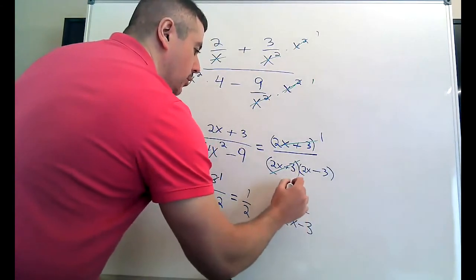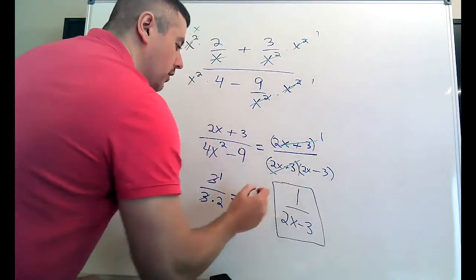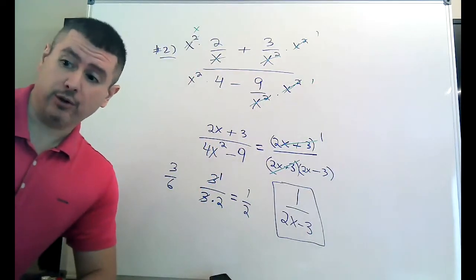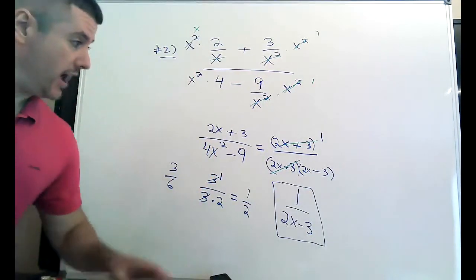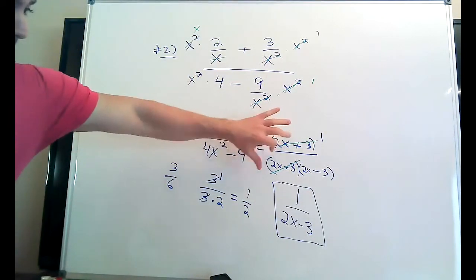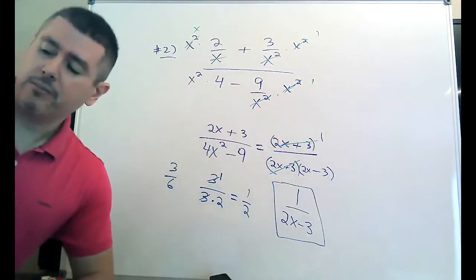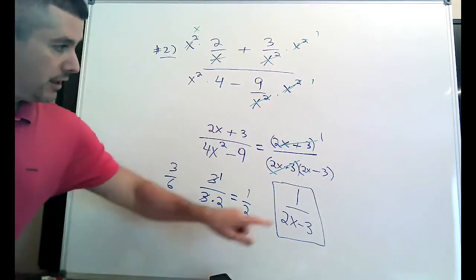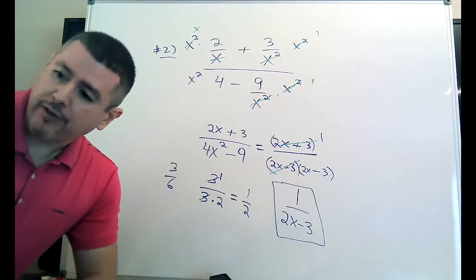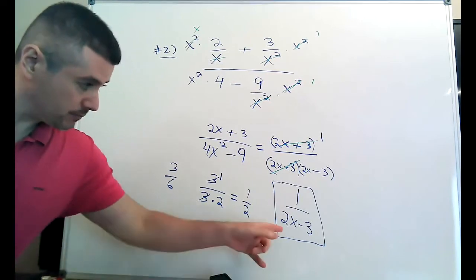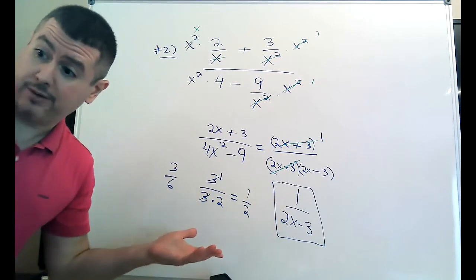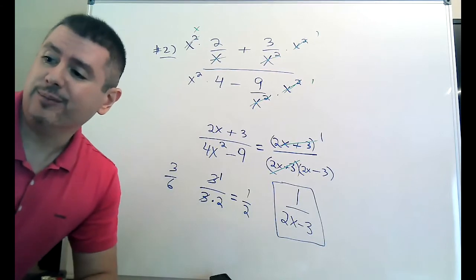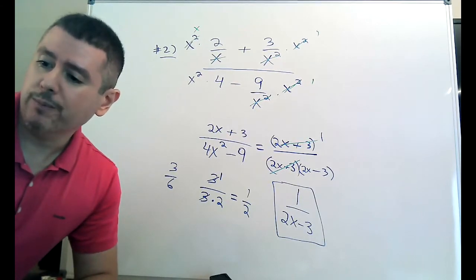You have to be super careful when you do that, because it's very easy to do it wrong — just cross those out and think it's two X minus three. It's not. You have to remember the one on top. So that's number two.